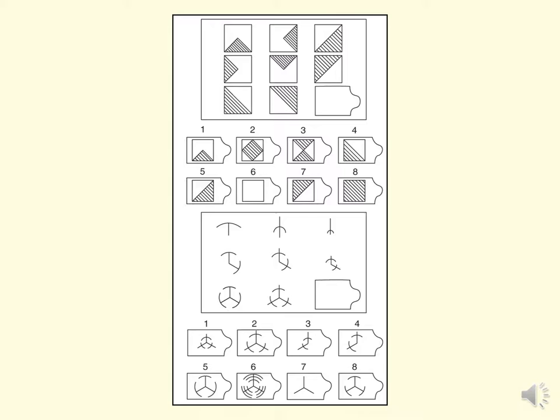Here are two examples designed to look like Raven's items. In the first matrix, you have a series of figures and have to guess which one goes in the bottom corner — probably item number eight, working through addition across rows or down columns. In the second matrix, working across and down, the answer appears to be item number one. Take a look and see if you can work them out.